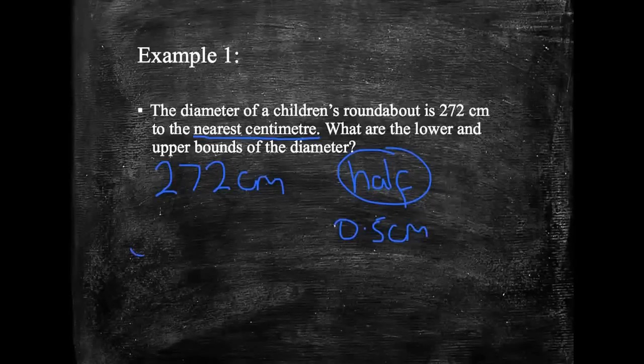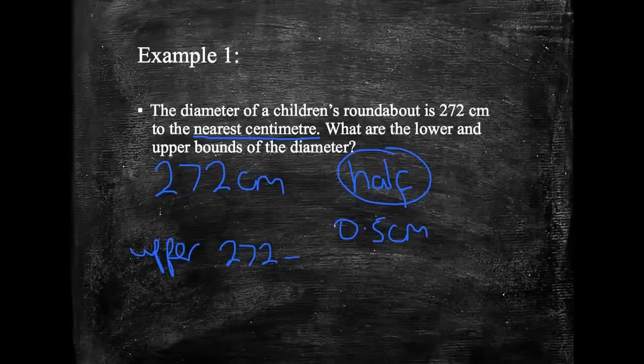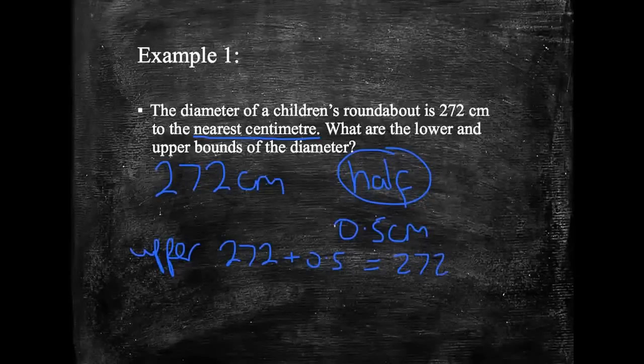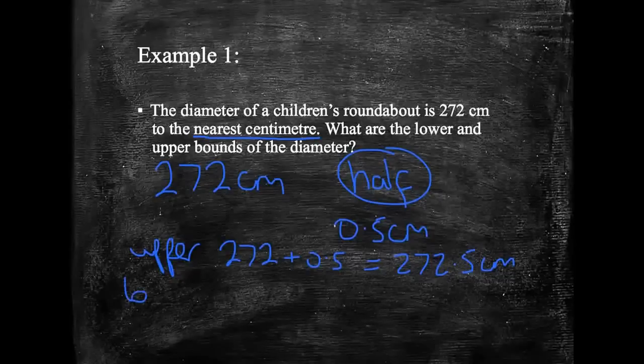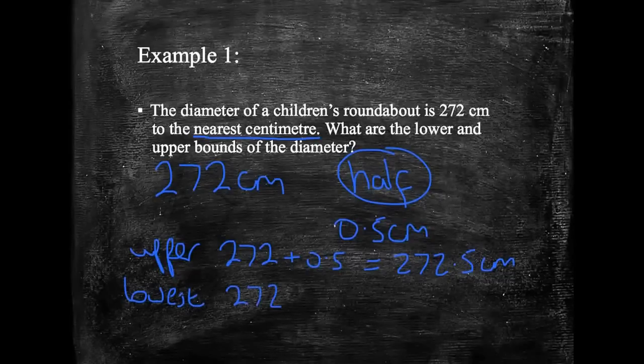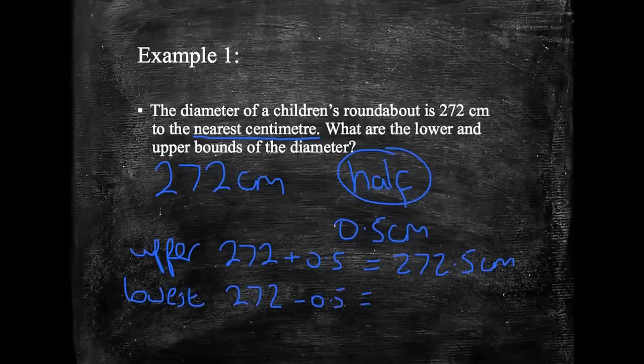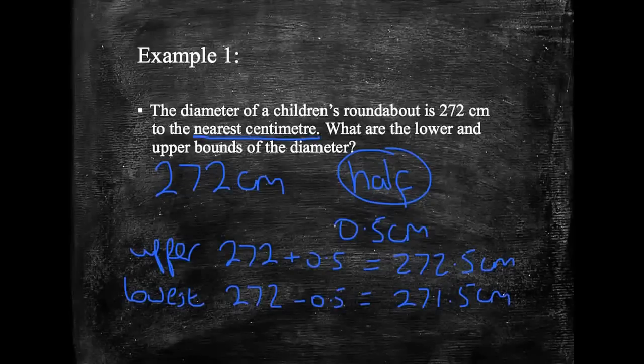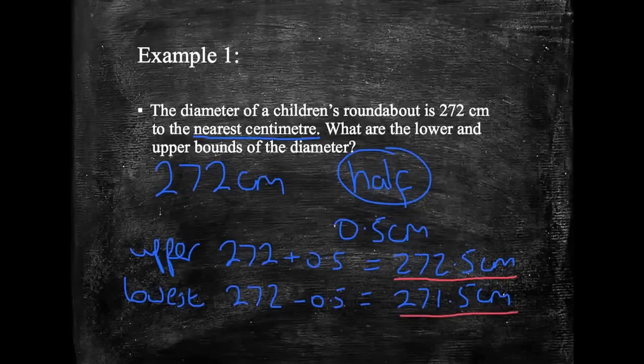The upper bound therefore, so the upper bound is 272 cm plus 0.5, which gives us 272.5 cm. And the lower bound, or the smallest it could have been, would have been 272 minus 0.5, which is 271.5 cm. We've got our biggest value it could have been and our smallest value it could have been.